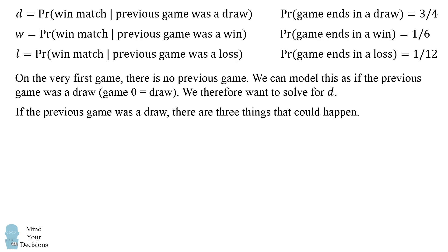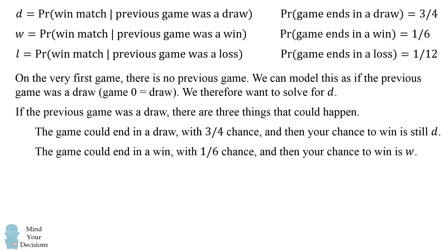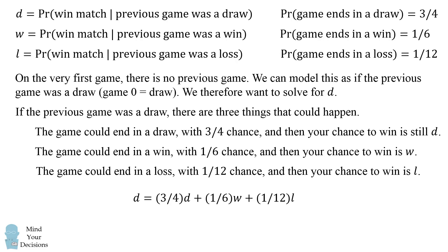Now if the previous game was a draw, there are three things that could happen. The game could end in a draw with a 3 fourths chance, and then your chance to win is still D because then the previous game will still be a draw. The game could end in a win with a 1 sixth chance and then your chance to ultimately win the tournament will be W. Finally, the game could end in a loss with a 1 twelfth chance and then your chance to win will be L. So we can write this in a single equation: D is equal to 3 fourths times D plus 1 sixth times W plus 1 twelfth times L.